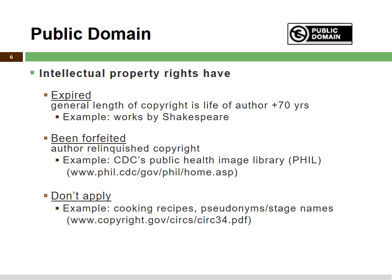Another example of something that could be in the public domain is if the author has relinquished the copyright to the item. For example, the Centers for Disease Control have an entire library of public health images that are in the public domain, and they can be found at the website URL listed here. Items to which a copyright doesn't apply are also in the public domain. For example, cooking recipes, pseudonyms, or stage names are not copyrightable. You can find more information about this from the U.S. Copyright webpage.